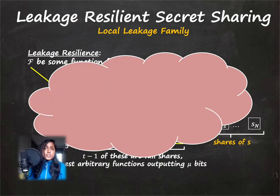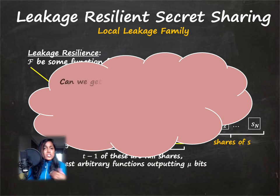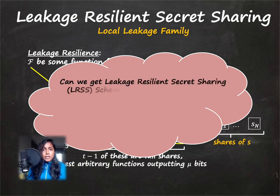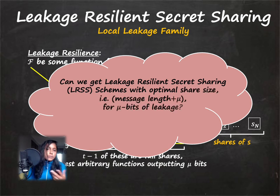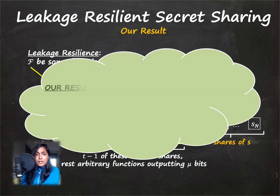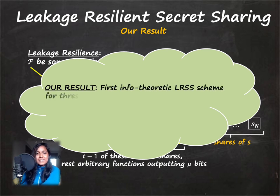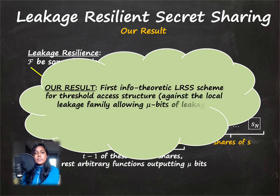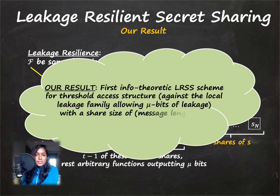This is the family of interest for our talk. More broadly, a central question in leakage resilient secret sharing stems from the fact that Shamir secret sharing achieves optimal share size for regular secret sharing. So naturally the question is: can we get any leakage resilient secret sharing scheme that achieves this optimal share size, which with leakage would be message length plus μ, where μ is the number of bits of leakage per share? We answer this question affirmatively. Our result is the first information-theoretic leakage resilient secret sharing scheme for the threshold access structure against the local leakage family, allowing μ bits of leakage from the remaining shares besides the T minus one full shares, achieving a share size of message length plus μ.